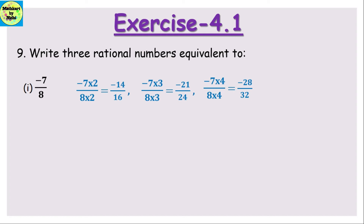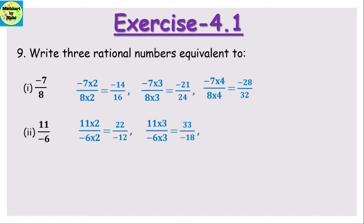For the second part, I will again multiply by 2, 3, and 4. So 11/(-6): multiplying by 2 gives 22/(-12); multiplying by 3 gives 33/(-18); multiplying by 4 gives 44/(-24).